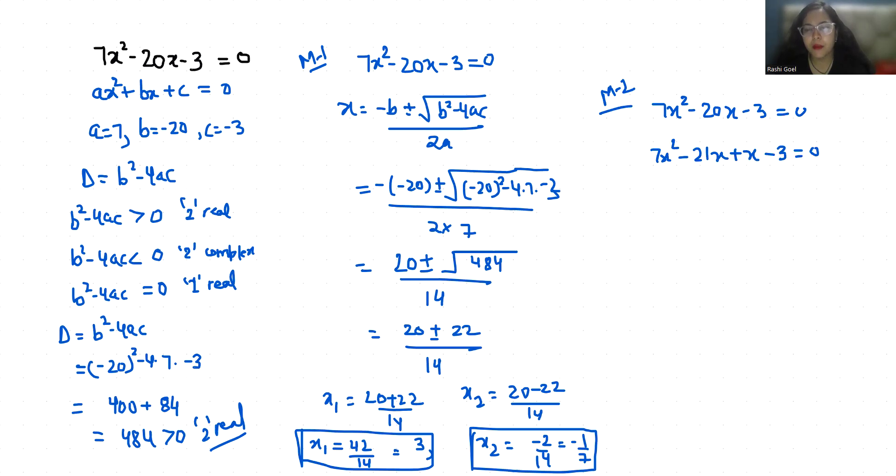Now from the first two terms, if 7x is common, so x minus 3, and if 1 is common, x minus 3 equals 0. So x minus 3 equals 0, or 7x plus 1 equals 0.